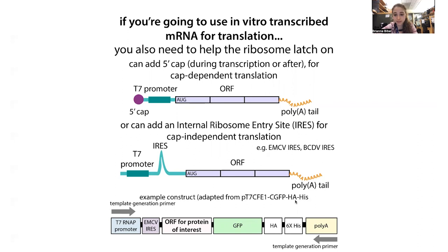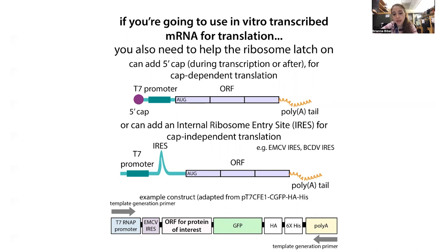Here's an example construct adapted from Thermo Fisher. You have your T7 RNA polymerase promoter, then the IRES. The promoter tells T7 to start making RNA from the DNA. The IRES tells the ribosome to start making protein from the RNA that T7 RNAP made. Then you have the open reading frame for your protein of interest — here fused to GFP as a reporter to see if the protein is being made, plus tags for purification. I'm making primers to copy this region from the plasmid using PCR rather than linearizing, for more amplification with less work.